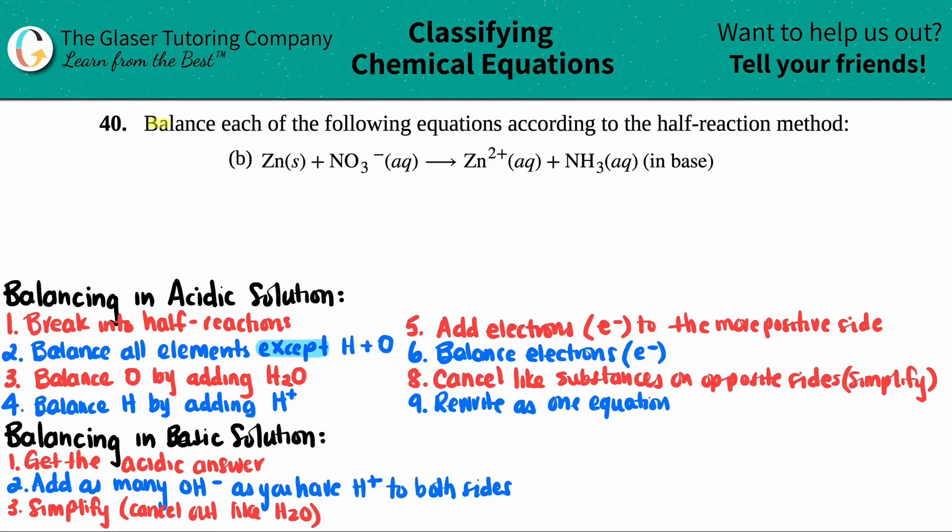Number 40, balance each of the following equations according to the half-reaction method, letter B. In this case, we have to balance zinc solid plus nitrate ion aqueous yields Zn²⁺ plus NH3 aqueous, which is ammonia, and we need to do it in basic conditions. I wrote all the rules down here at the bottom, how to balance a solution in a base.